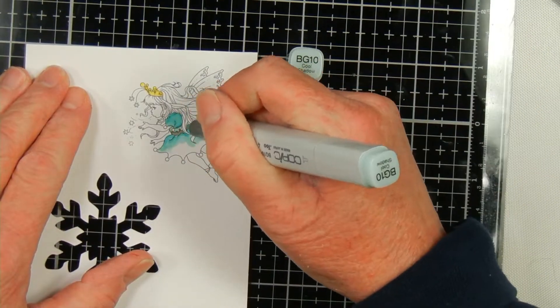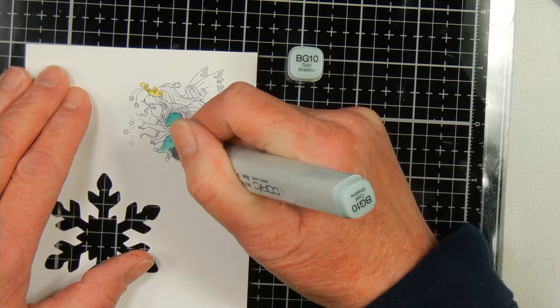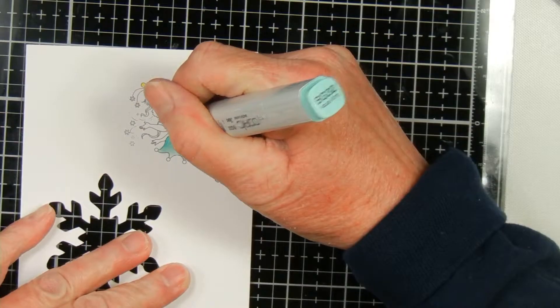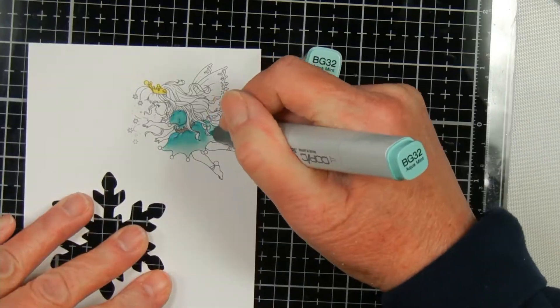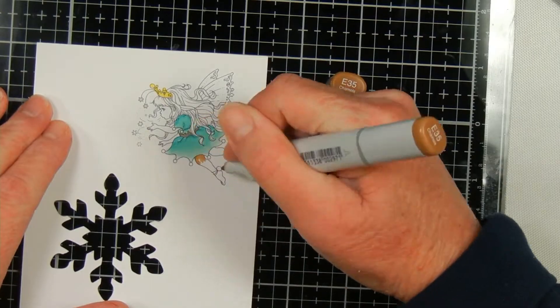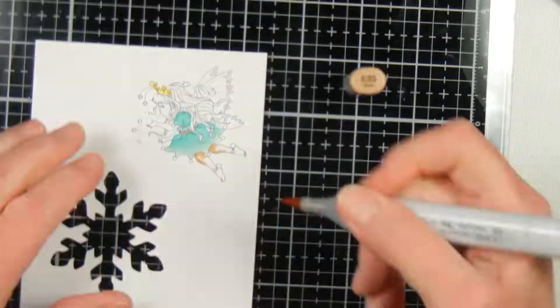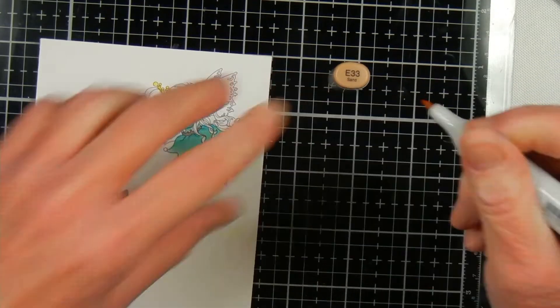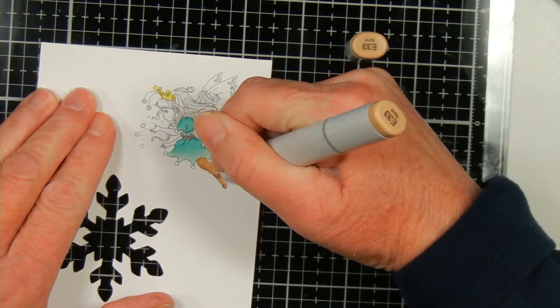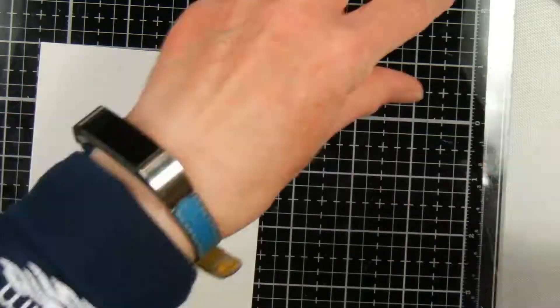On the Copic coloring, I start with the darker colors and then move to the lighter colors, starting in the areas where the shadows will be. I chose my colors based on how I wanted to do the picture, and I'm doing the little girl a little bit darker complected because I'll probably send this to my sponsor child in Mexico.